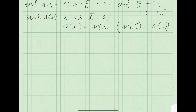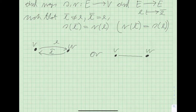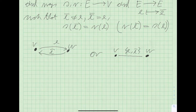We can draw an edge between vertices V and W: E goes one way, and E-bar goes the other way. We'll also draw them as more classical undirected graphs, where each undirected edge represents a pair of directed edges, one being the inverse of the other.